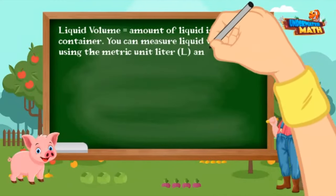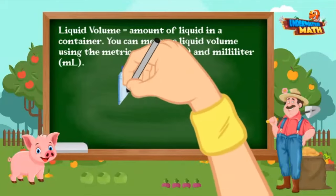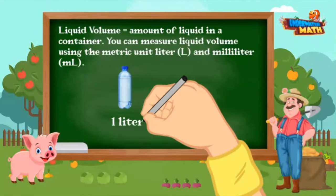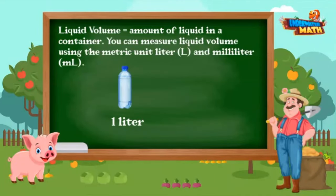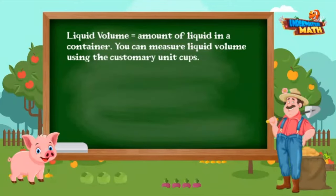You can measure liquid volume using the metric unit liter and milliliter. A water bottle holds about one liter. If you were to collect 20 raindrops that would equal one milliliter. A teaspoon can hold about five milliliters. You can also use the customary measurement unit cups.